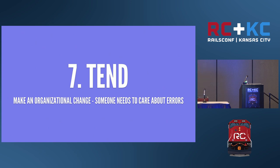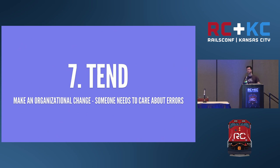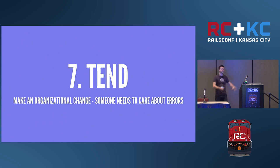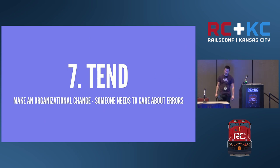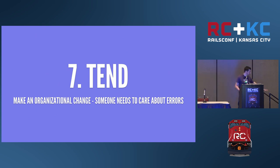If there's one thing I think is the most important takeaway to implement in your teams, it's this one: Tend. All the other stuff I've talked about is tooling — technology choice or implementation. This is a fundamental organizational change. You've got production errors and issues — what's the point in having all of that in place if no one is responsible for actually going ahead and fixing it? Unless people care about these problems, there's no point in detecting them.